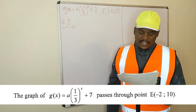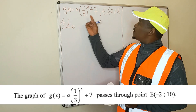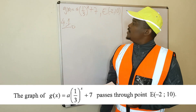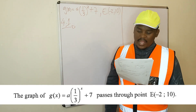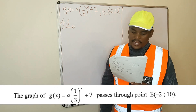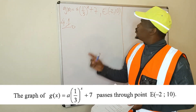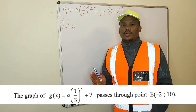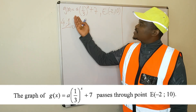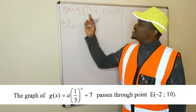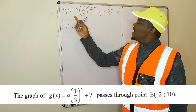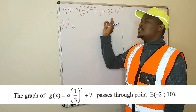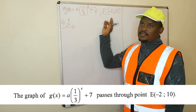The graph g of x, which is equal to this exponential function here, passes through point E, which has these coordinates. So you are given a graph g of x with this equation, and you are told that this graph passes through the point (-2, 10).